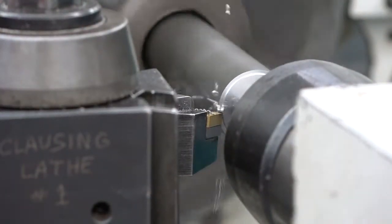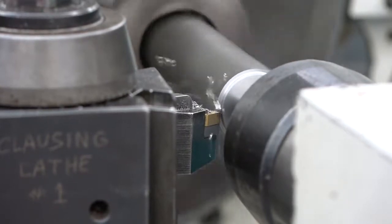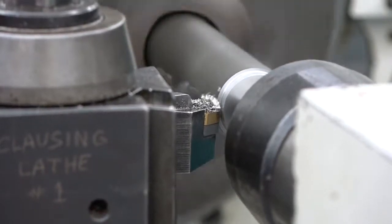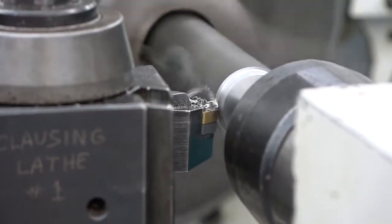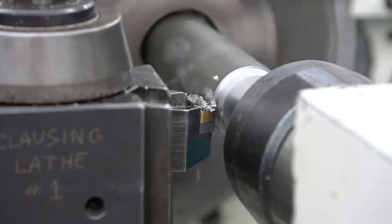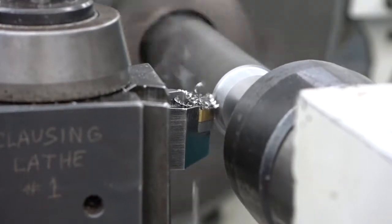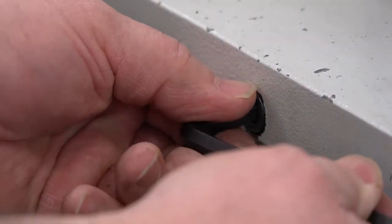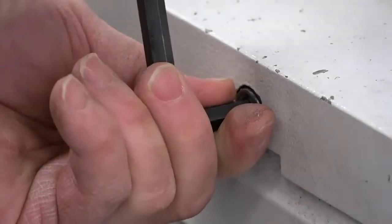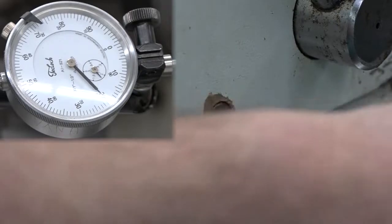Always move the tailstock toward the operator. External tapers that are cut from right to left always have the small end of the taper on the right end. Cutting this way allows you to control the depth of the cut. Use the tailstock adjustment screws to move the tailstock toward you to the calculated offset amount.